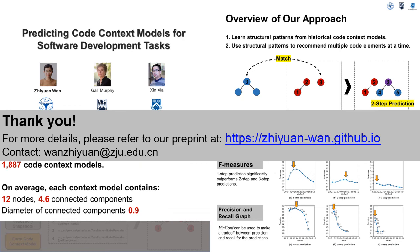To summarize, in this work we have explored how developer interaction histories can help predict code context models for software development tasks. We introduced the motivation and basic idea of our approach, and provided details of our dataset, which enables future investigations by others. The experimental results demonstrate that integrating interaction histories and code structure information can benefit the proactive formation of more accurate code context models. For more details, please refer to our preprint at my homepage. Thank you for listening.